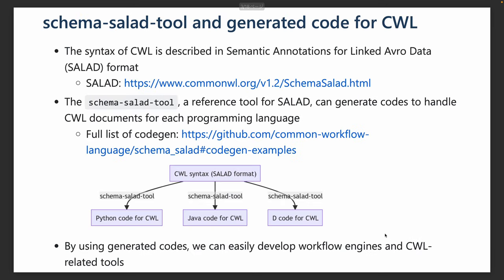First of all, the syntax of CWL is formally described in Schema Salad format, and the CWL community publishes a Schema Salad tool as a reference tool. You can validate a CWL document with it, and it can also generate code to handle CWL documents for each programming language, such as Python, Java, C++, .NET, TypeScript, and C.